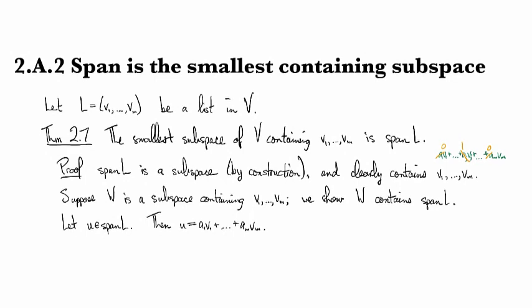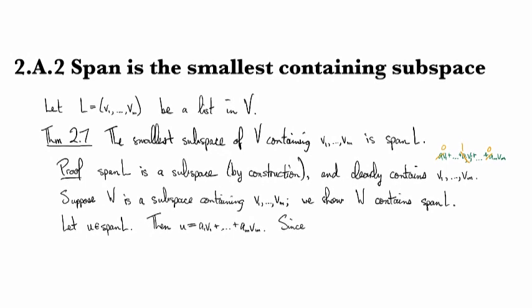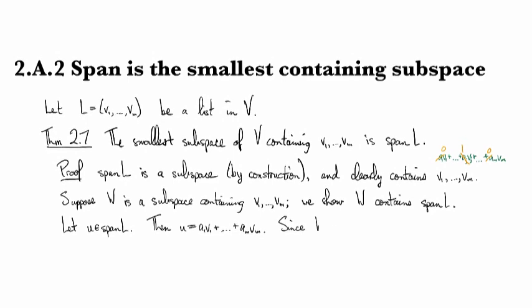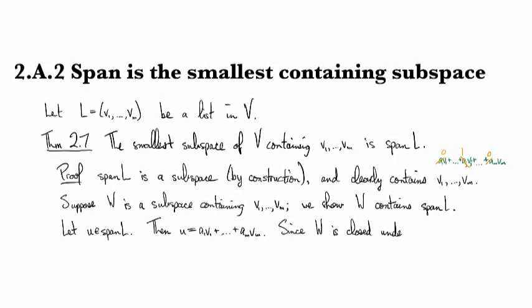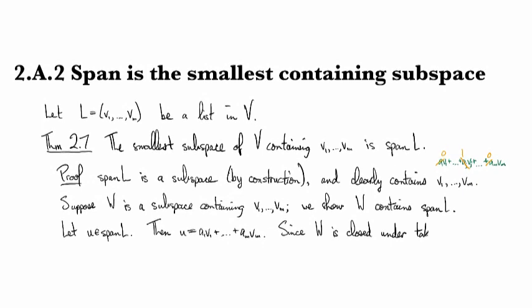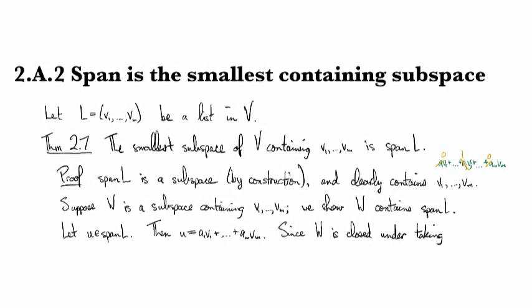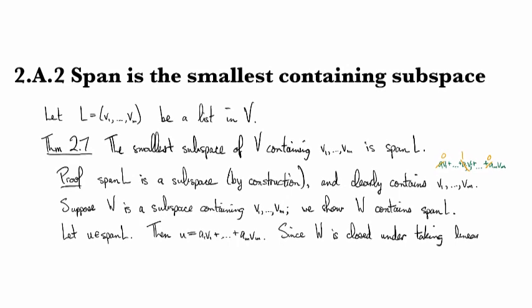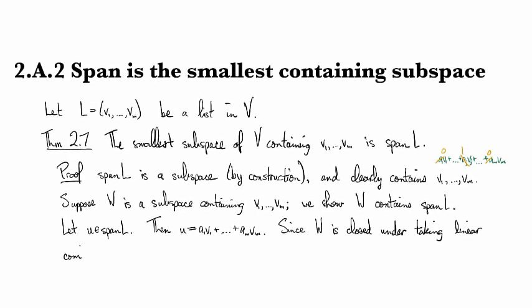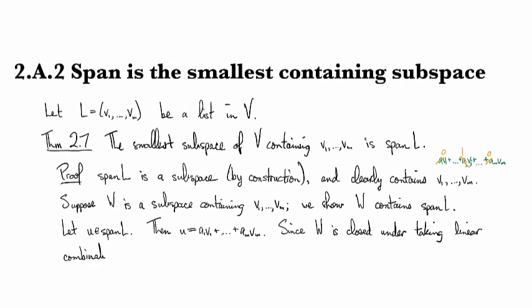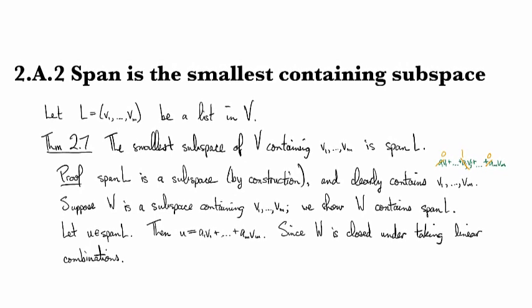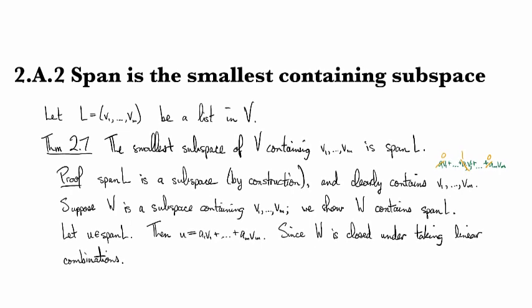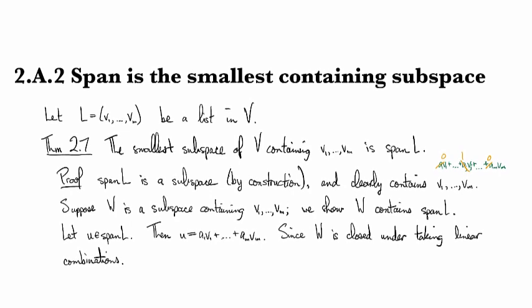And then you notice that since W is a subspace, it's closed under taking linear combinations. So since U is a linear combination of elements of W...